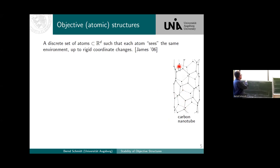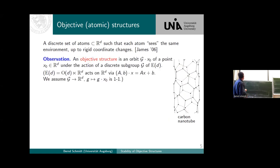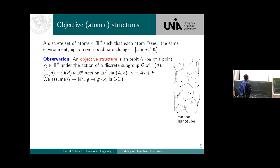Here's a typical example of a carbon nanotube. If you sit on this atom here, it looks exactly the same as if you look from this other atom, up to a rigid coordinate change. That is, by definition, an objective structure. There's a group-theoretic way to describe it: an objective structure is nothing but the orbit of a discrete subgroup of the group of isometries of R^d. The group of isometries acts on R^d by multiplying with an orthogonal matrix plus some translation. If you take a single point and take the orbit, this is what you get out.